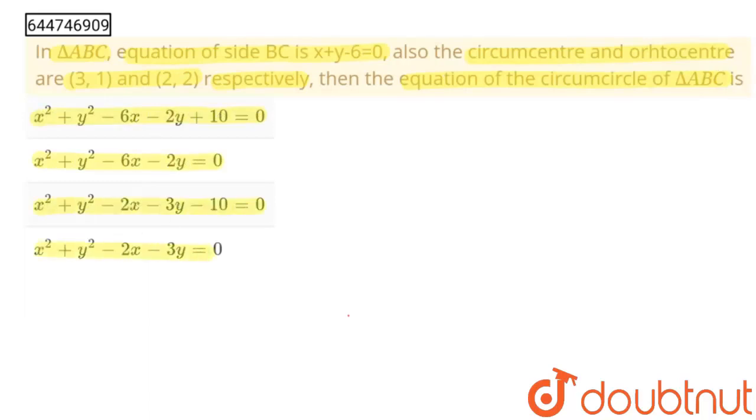See, suppose this is our one side of triangle. I am going to form this triangle. Now this is our A, this is our B and this is our C. And BC side is x+y-6=0.